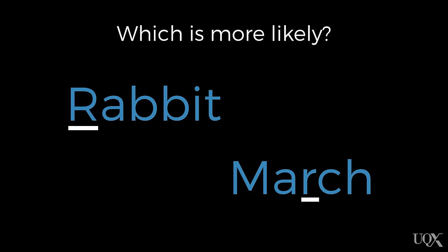In the activity we asked you a number of questions. The first question was whether it was more likely that a word in the English language would start with the letter R or have the letter R in the third position. Most of you would probably guess that it was more likely that R would be in the first position.